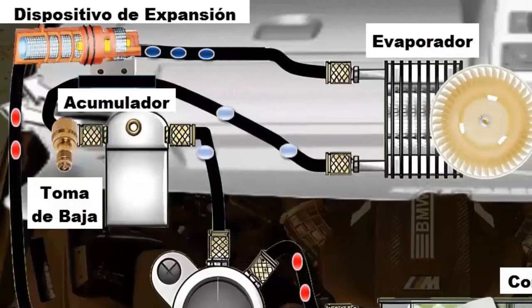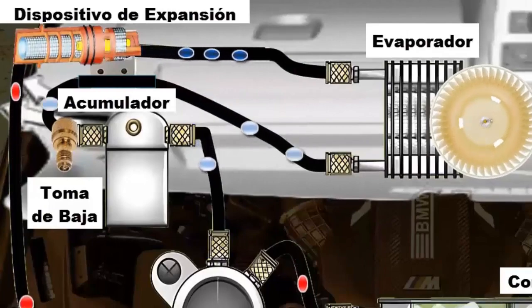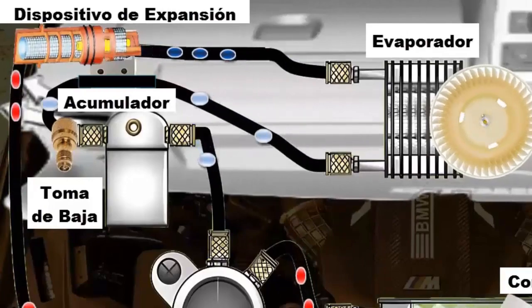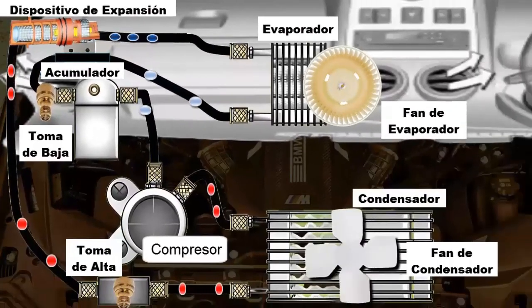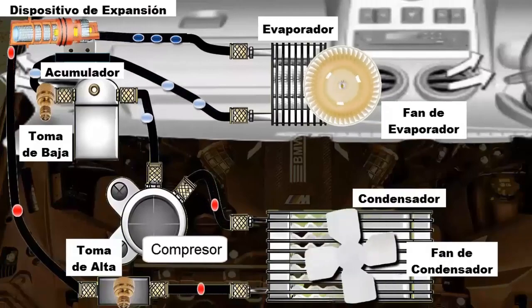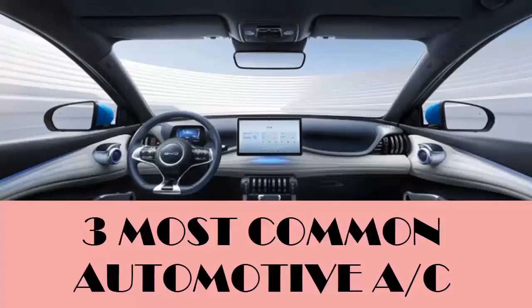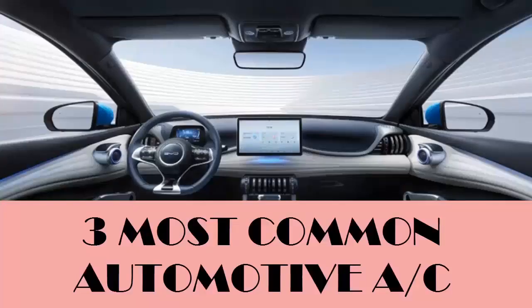Finally, the refrigerant returns to the evaporator, closing the refrigeration cycle. The three most common failures in the automotive air conditioning system, as well as possible solutions, are as follows.